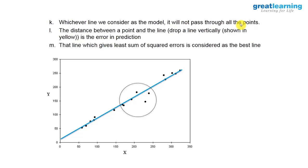Similarly, data points can be below the plane. Data points sitting on the plane are those records for which the model is not doing any error. Data points above and below are the records for which the model is doing errors. When the model is being built, you are in the training stage, so all these errors are in training data. The best fit line is the line which does minimal errors in the training set.